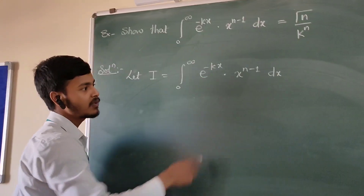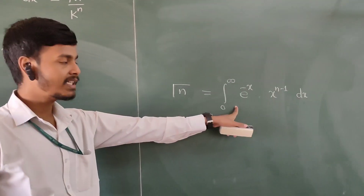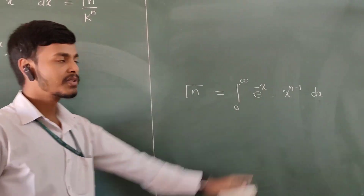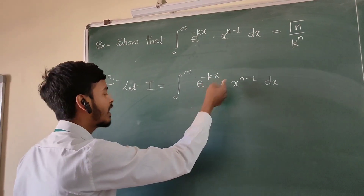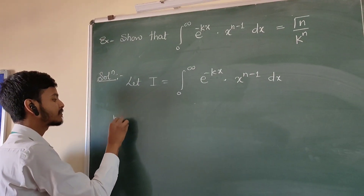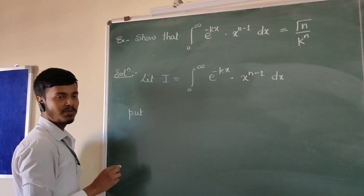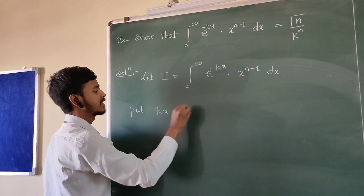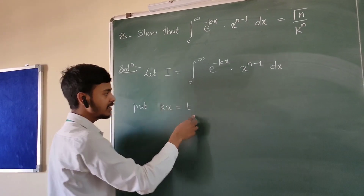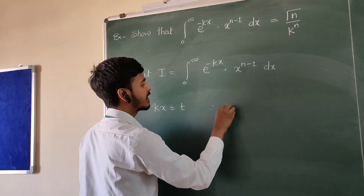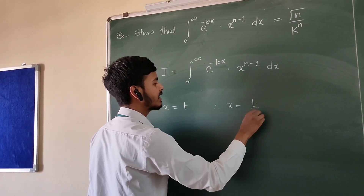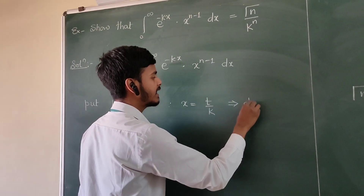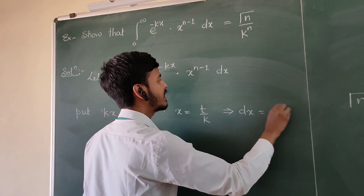Now substitute. As you can see the definition of gamma has e to the power minus x, but here the exponent is minus kx. So we make the substitution kx equals t. If kx equals t, then x equals t by k, and the derivative gives dx equals dt upon k.